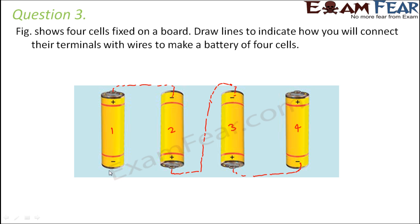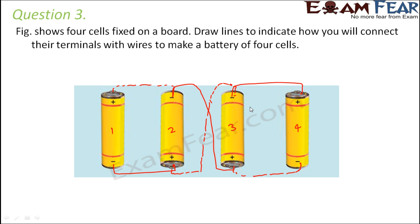The other option is that the negative of the first cell gets connected to the positive of cell two — basically the same principle, just starting from the other end. The negative of cell two connects to the positive of cell three, and the negative of cell three connects to the positive of cell four. Either way works. The key rule to remember is: the positive terminal of one cell must be connected to the negative terminal of the next cell, or vice versa.